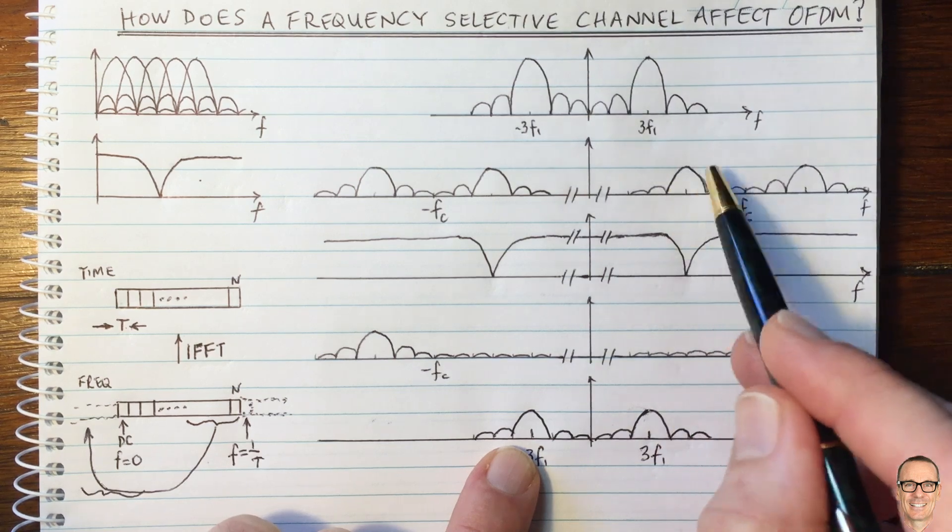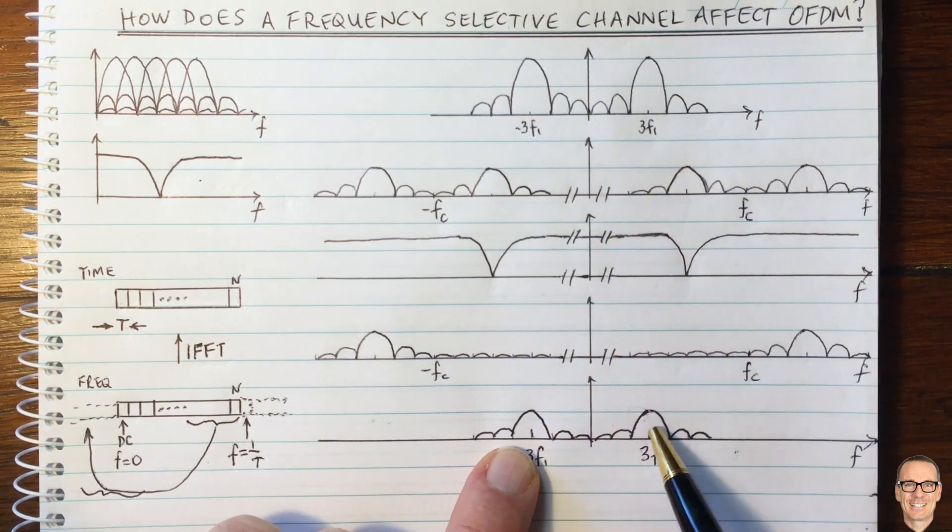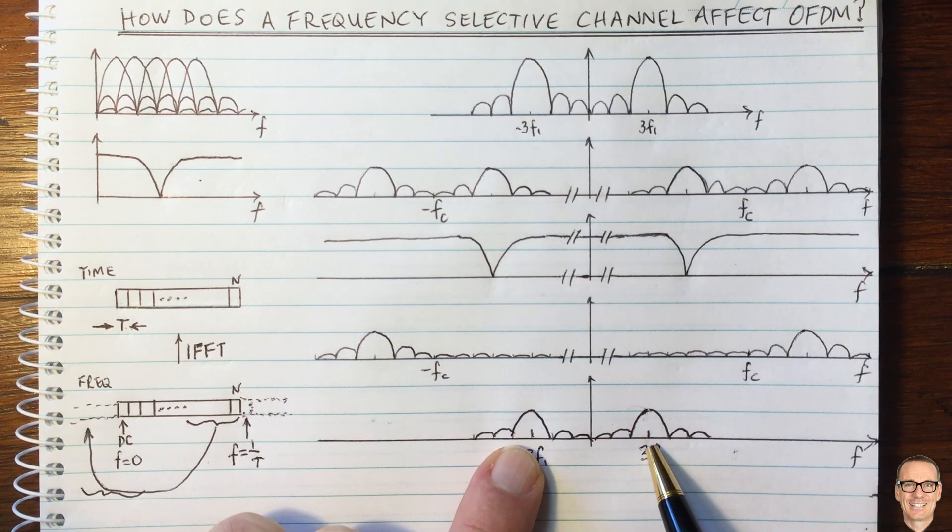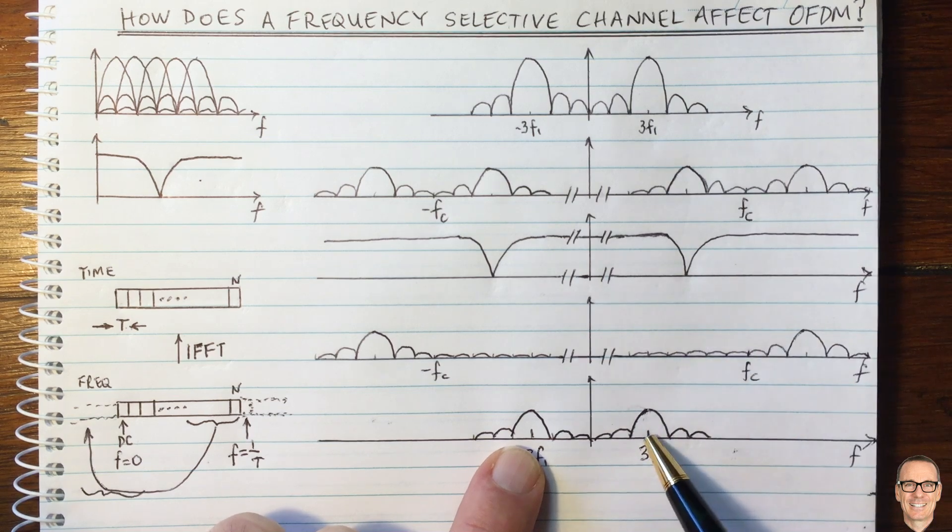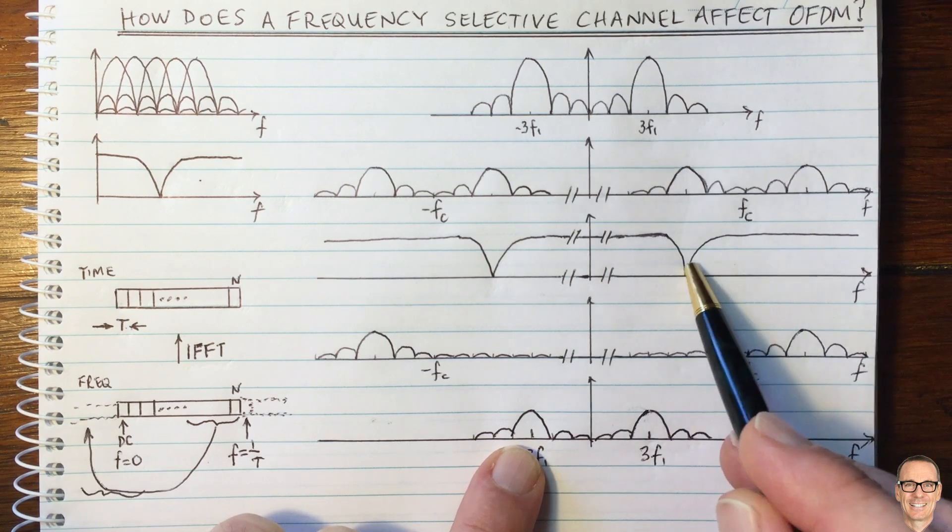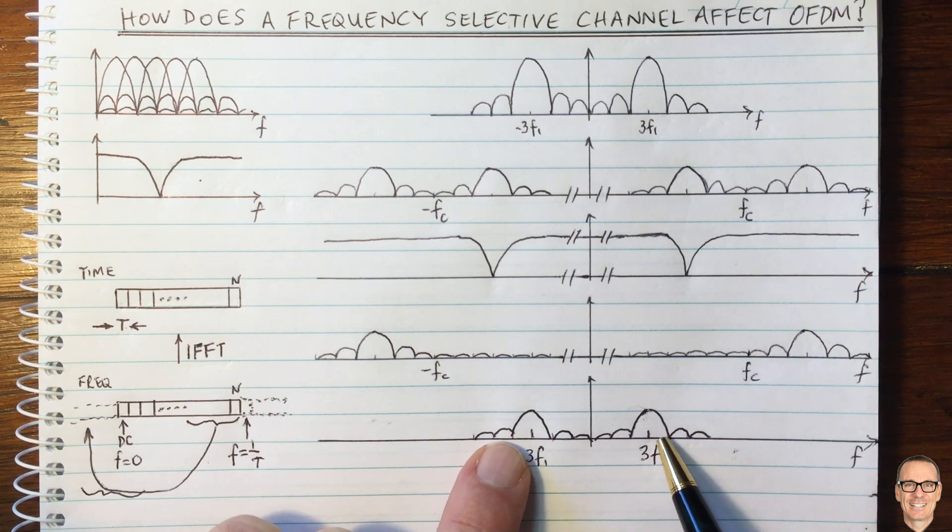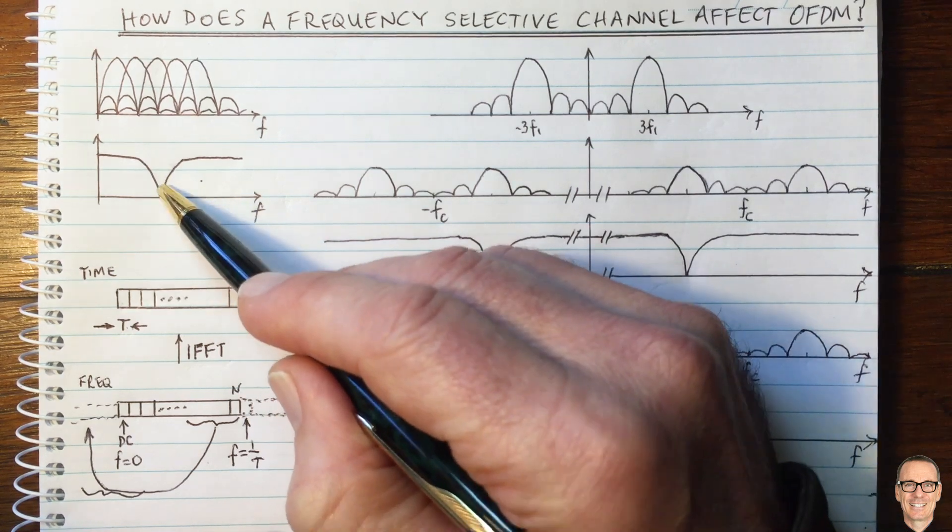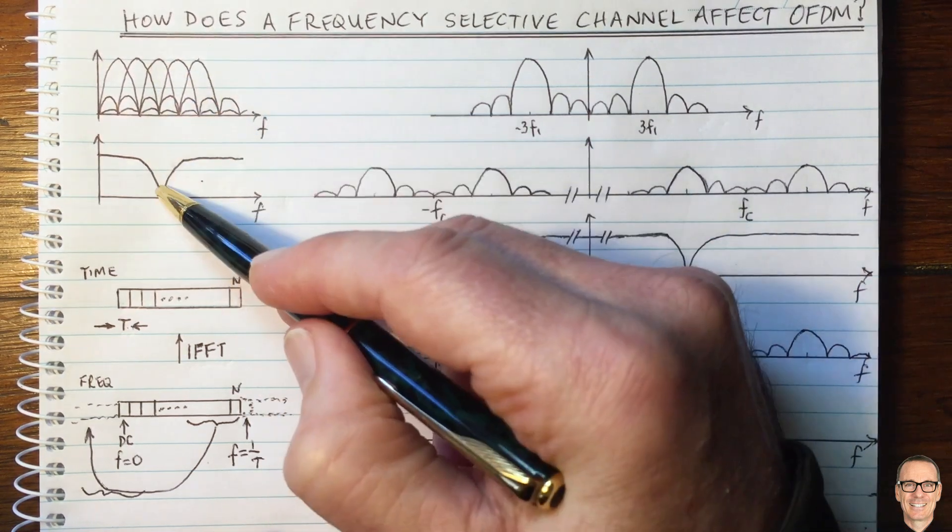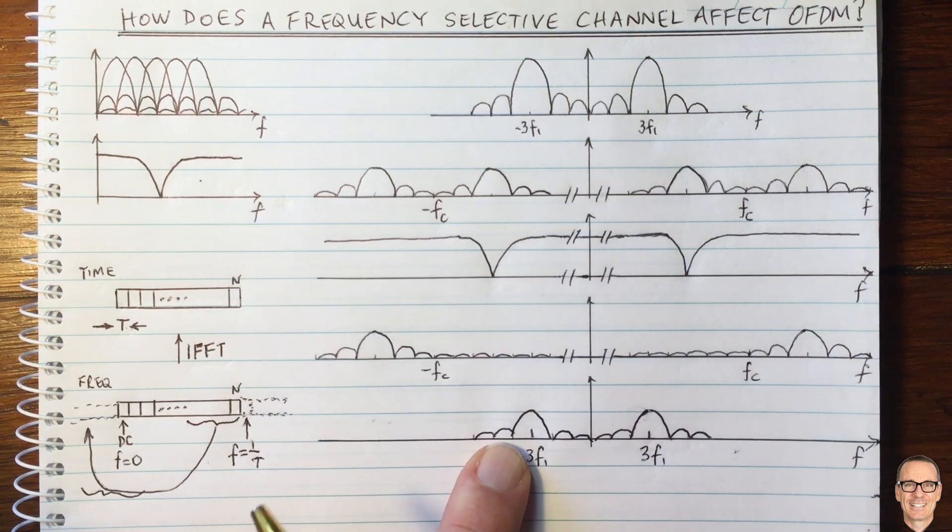It's got rid of part of that subcarrier. So you're getting half the power. And of course, there can be a phase change as well, but it does not, a single notch does not completely knock out a subcarrier, which is what seemed to be the case from thinking about it just at the baseband.